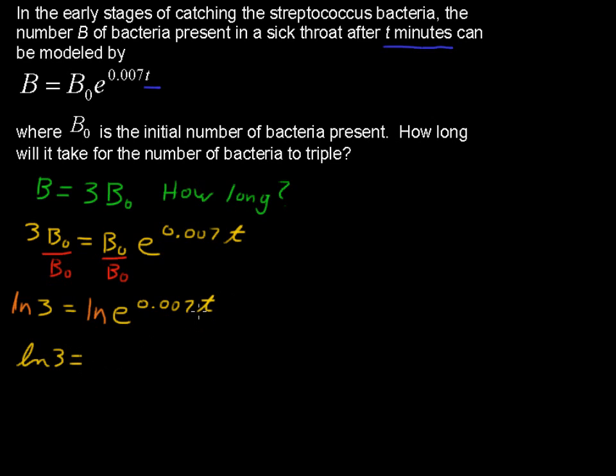Here's a property of logarithms. When we have the logarithm of something raised to an exponent, we can take that exponent and move it out to the front. So we have then 0.007 times T multiplied by the natural log of E. A little sidebar here.